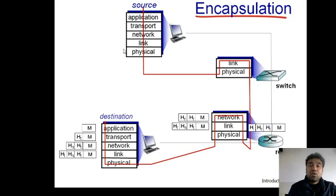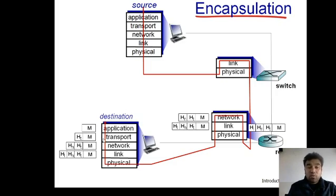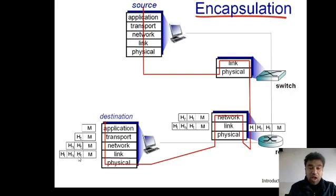This frame comes down to the physical layer, whose responsibility is to transfer data in the form of electrical or optical signals to the destination. At the sending side, the complete TCP/IP protocol suite is used as a common platform for communication. At the destination, once the data arrives at the physical layer, it is transferred up to the data link layer. The complete frame has three headers: a data link layer header, a network layer header, and a transport layer header.